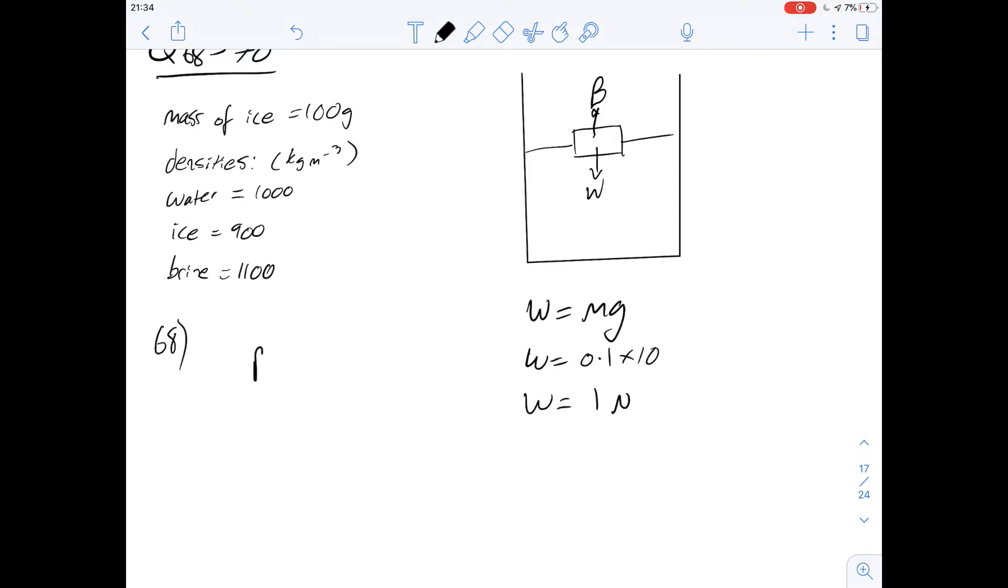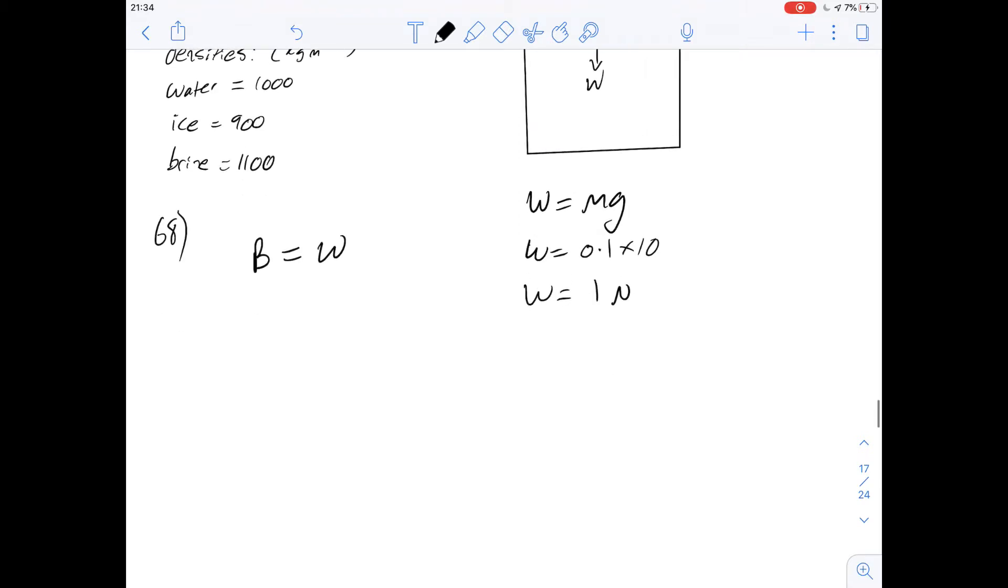Now given the ice cube is floating at the top, it's not moving up, it's not moving down, we can say that the buoyancy force is going to be equal to the weight, which is going to be equal to 1 newton. And the buoyancy force is going to be volume multiplied by the density of the liquid multiplied by the acceleration due to gravity.